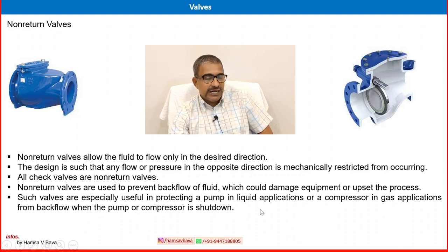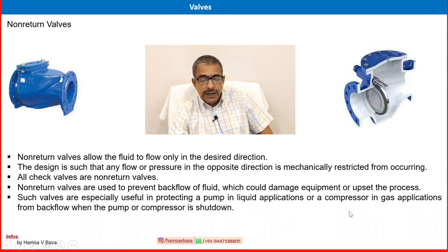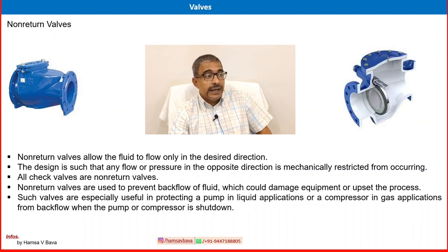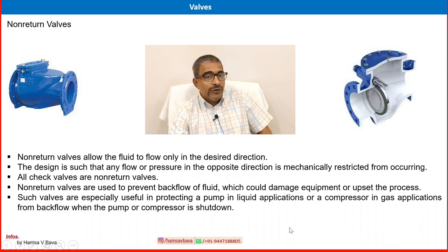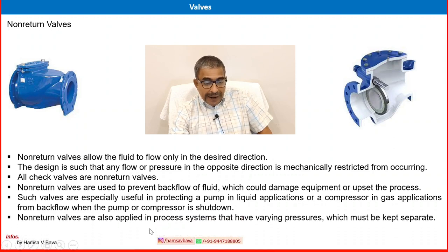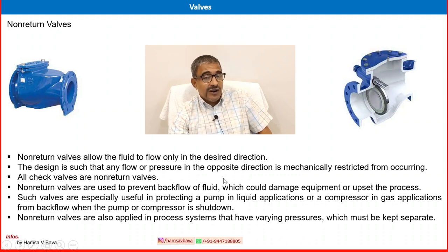Non-return valves are used to prevent backflow of fluid which could damage equipment or upset the process. They are especially useful in protecting a pump in liquid applications or a compressor in gas applications from backflow when the pump or compressor is shut down. Check valves are used in many process applications; two examples are the discharge side of a pump and the discharge side of a compressor. I request you to visit your operational field, refer to the P&ID, find the check valve symbol, and see where and why it is provided.